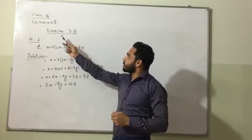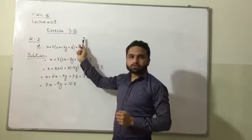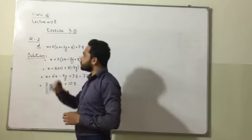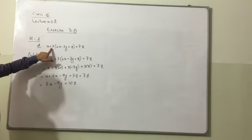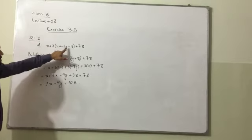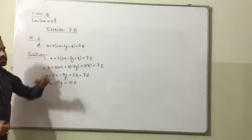Today we will solve question from exercise 3B. So question number 2, the part is given here: x plus 3 multiplied by 2x minus 3y plus c plus 7z.